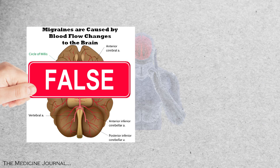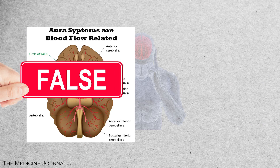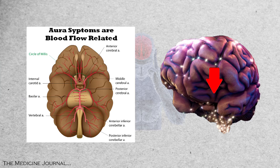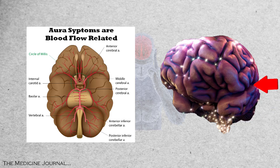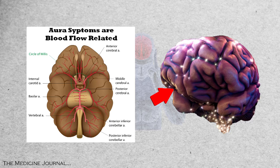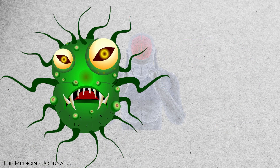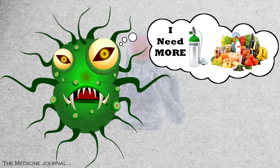While the migraine itself isn't blood flow related, the auras associated are. Blood flow to the region of the cortex associated with the headache is decreased before the onset of aura symptoms. This decrease tends to start in the back of the affected area and spreads to the front, and can reach levels indicating that cells in that area aren't getting enough oxygen and nutrients for normal function.